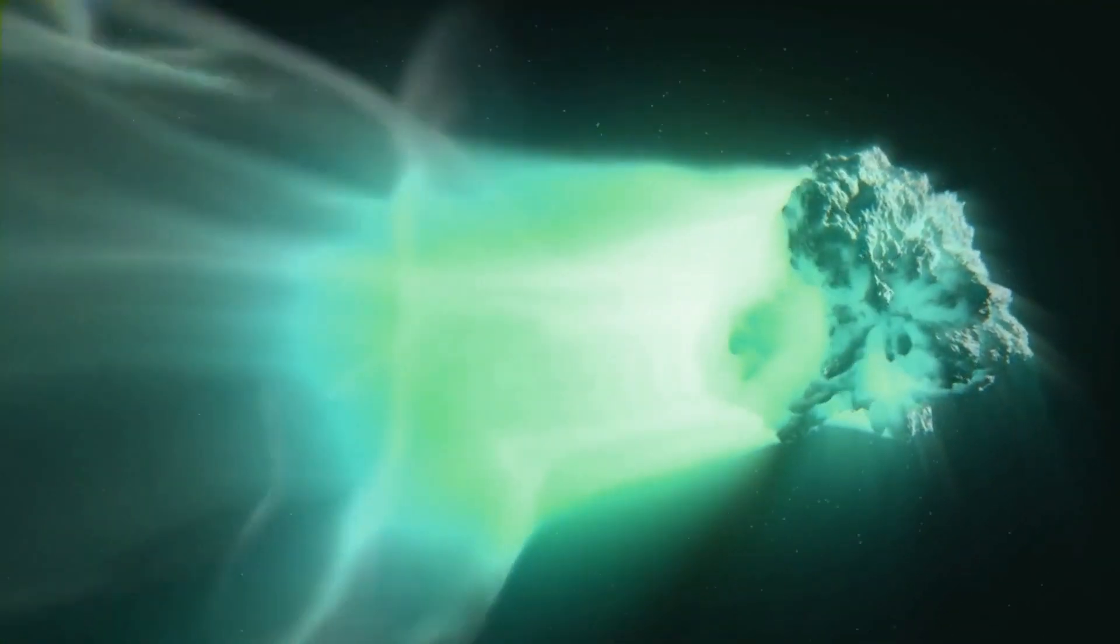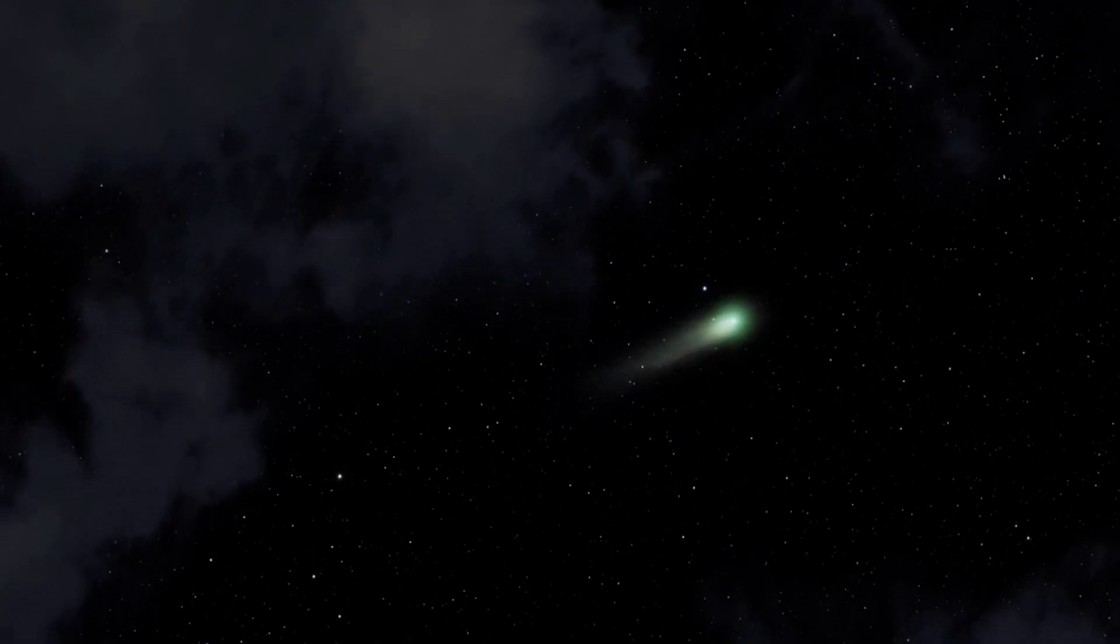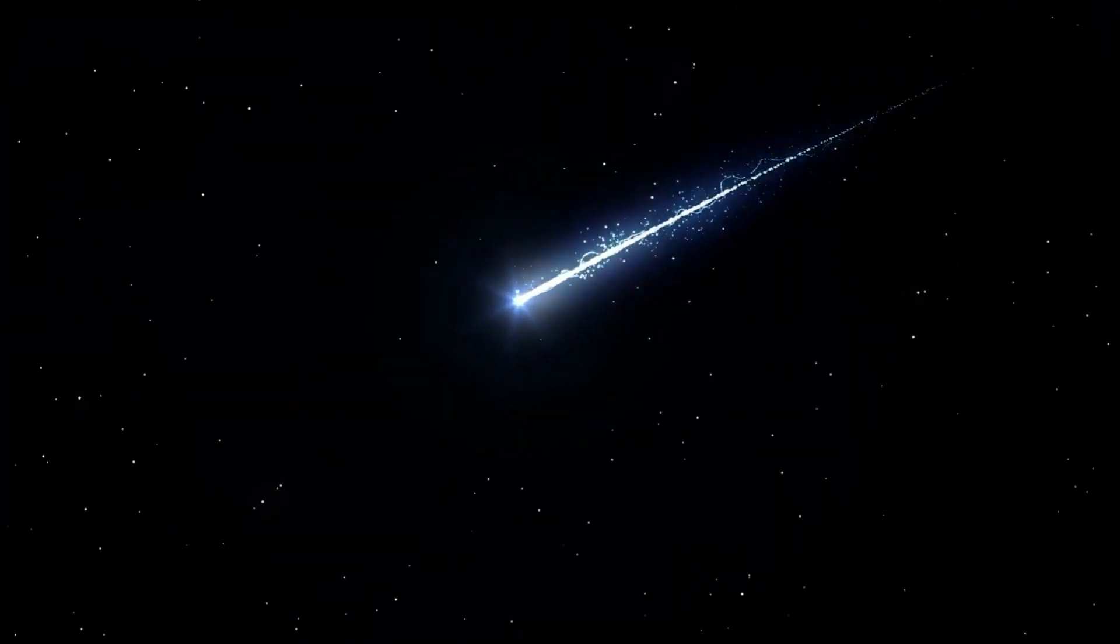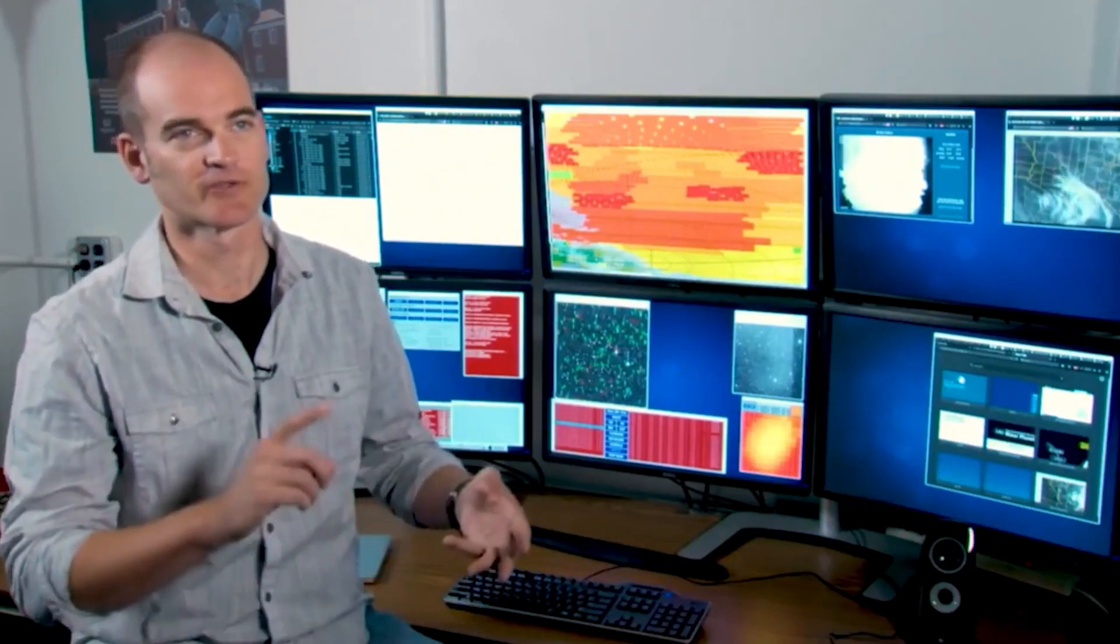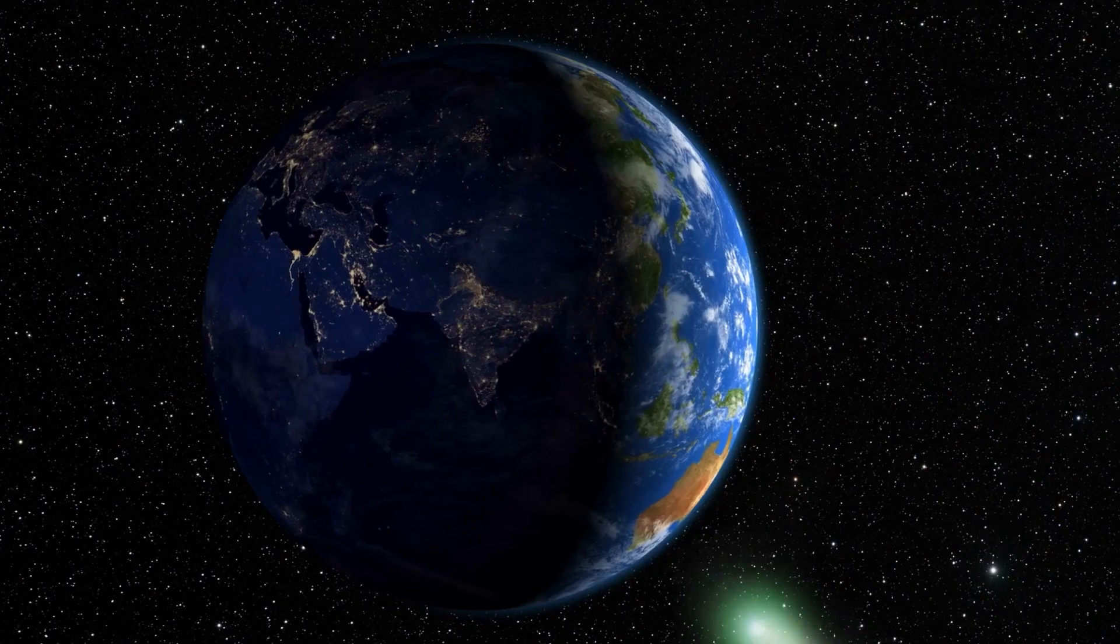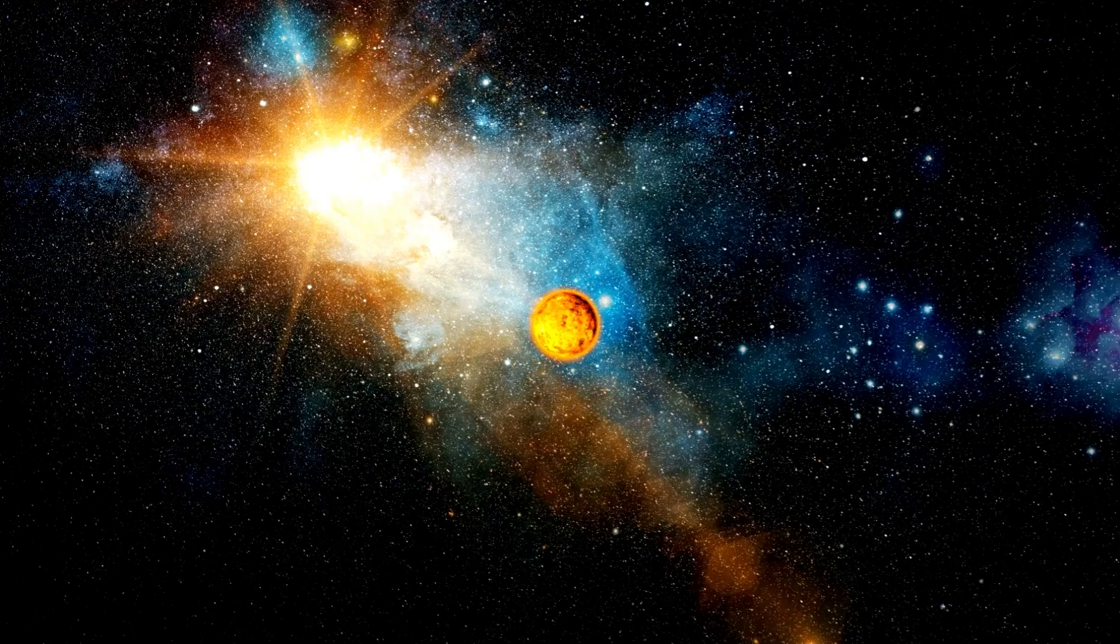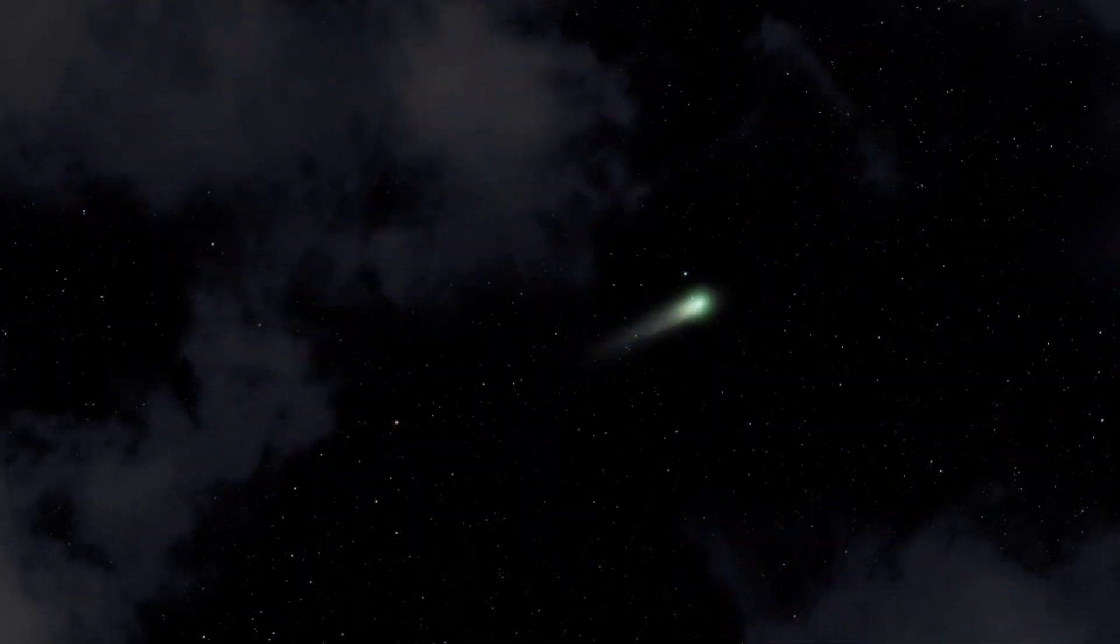During its initial detection, the comet exhibited an apparent magnitude of 10.4, which translates to approximately 40 times dimmer than a star on the cusp of being visible to the naked eye. Currently, the comet is undergoing a process of intensification as it draws nearer to both Earth and the Sun. As of August 26, its magnitude has increased to 7.9, marking a substantial ten-fold surge in brightness compared to the night it was first discovered.